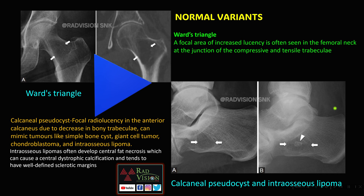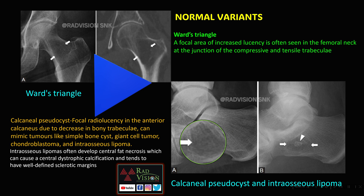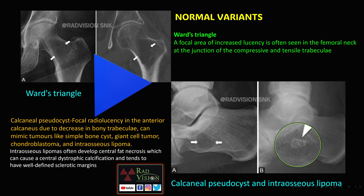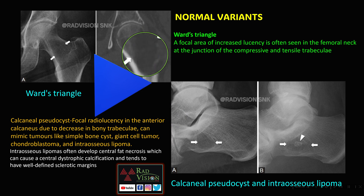Here you can see a triangular lucent area in the femoral neck at the junction of compressive and tensile trabeculae — this is called Ward's triangle. Another lucent area is noted in the calcaneum, also devoid of trabeculae, which can mimic simple bone cyst, GCT, chondroblastoma, or intraosseous lipoma. An intraosseous lipoma can be differentiated from the calcaneal pseudocyst by the presence of a central calcified nidus — central dystrophic calcification due to fat necrosis — called the cockade sign. Ward's triangle and calcaneal pseudocyst should not be confused with GCT, SBC, or chondroblastomas.